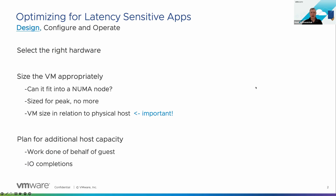Let's talk about maybe a couple of items here. I look at it as a design, configure, and operate model. If we want to design an environment that will host these applications properly, hardware is important — all processors aren't equal, and some have higher core counts or higher clock frequencies. We want a very prescribed approach on the hardware platform. We also want to build the VM appropriately, sizing it for peak and fitting it into a NUMA node if we can. Critically, the VM needs to be sized properly relative to the host, because we also do I/O completions on it in the network and storage stack, so we need host processors available to do that work on behalf of the VM.